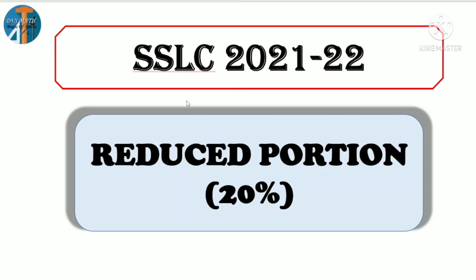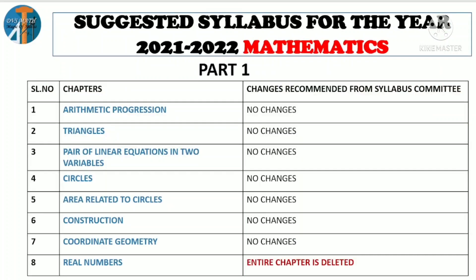This is Part 1 and Part 2. Part 1 is 8 lessons. Part 2 is 7 lessons — complete 15 lessons. This is Part 1. Suggested syllabus for the year 2021-22. This is Mathematics Part 1 — you have 8 lessons.